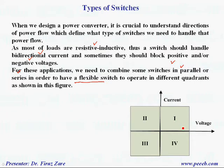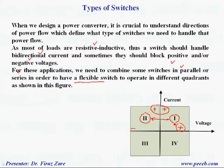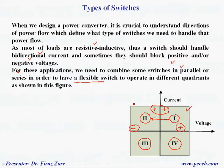For example, if we have to provide positive voltage and positive current — operating in this quadrant — or if we have to operate in this quadrant, providing positive current and blocking negative voltage, or if a switch has to operate in both quadrants providing positive current and blocking positive and negative voltage. Sometimes a switch can operate in one quadrant, two quadrants, or even four quadrants, so we need a flexible switch to handle the required power flow.